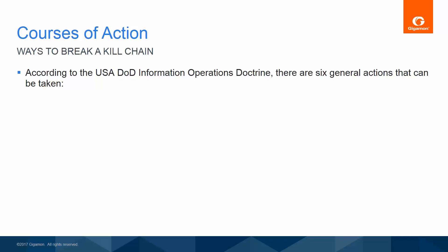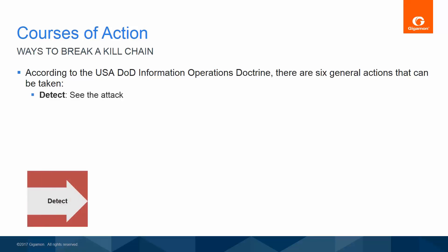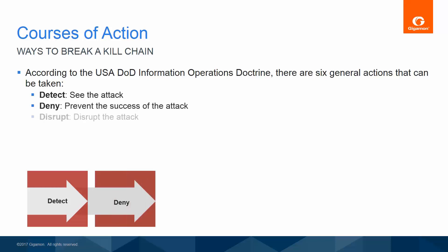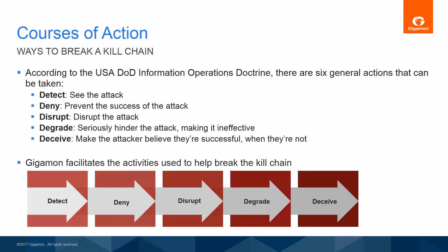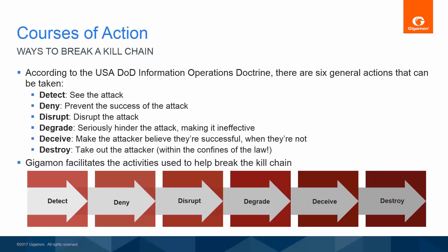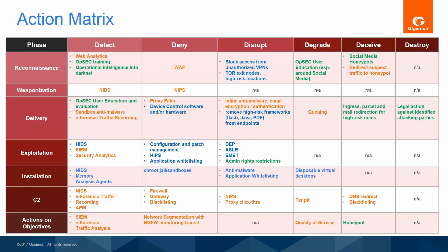The United States Department of Defense Information Operations Doctrine lists six generalized actions that can be taken to break a kill chain. The first such action is where good visibility plays a critical part — the attack must be detected. The next four actions are facilitated by features available from a visibility infrastructure. The last action is outside the scope of what GigaMon products are designed to help with. This table represents some of the ways and means in which a variety of tools and procedures work toward breaking a kill chain.